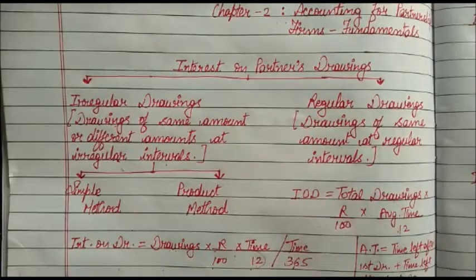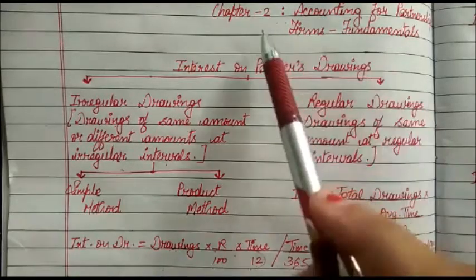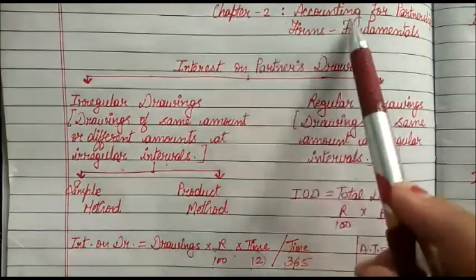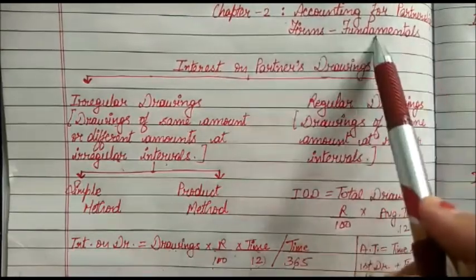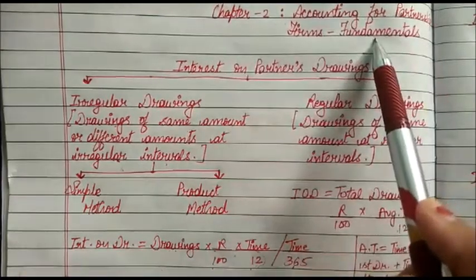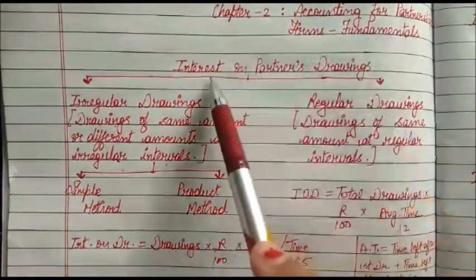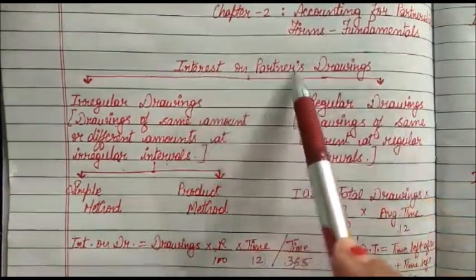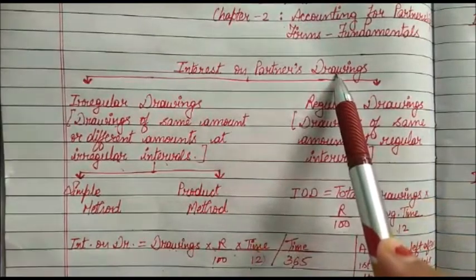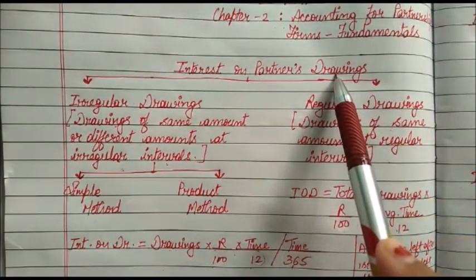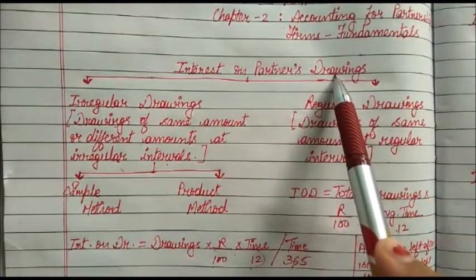Good morning students. Today we begin with Chapter 2, that is Accounting for Partnership Firms: Fundamentals. Today's topic is interest on partner's drawings. Drawings means the amount that the partner withdraws from the firm.